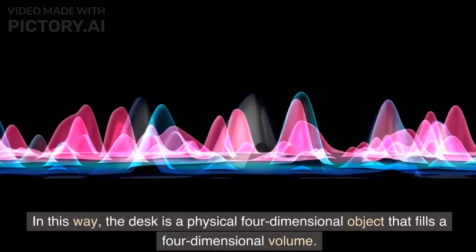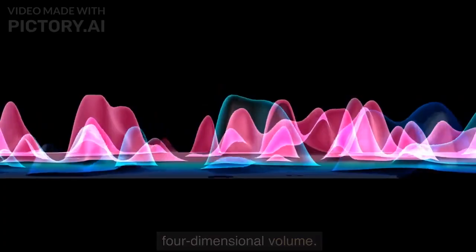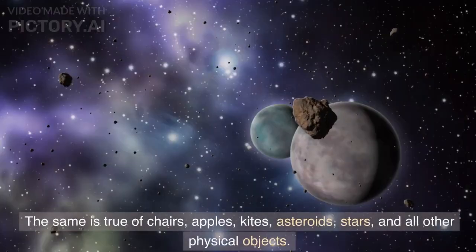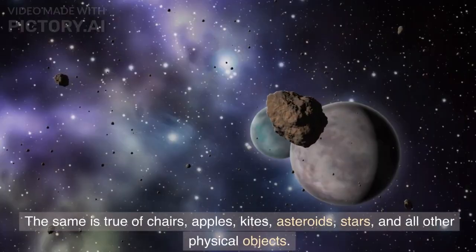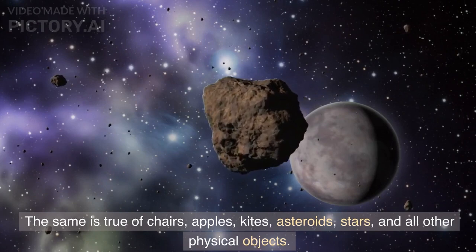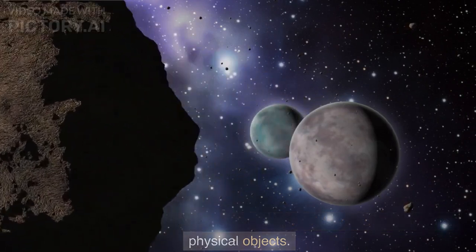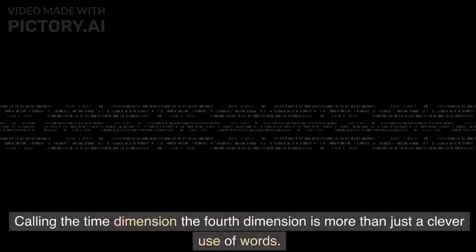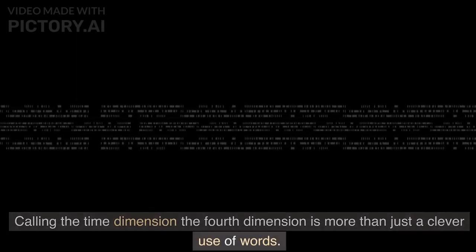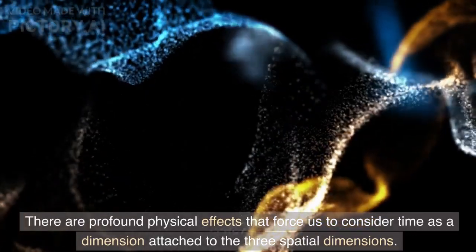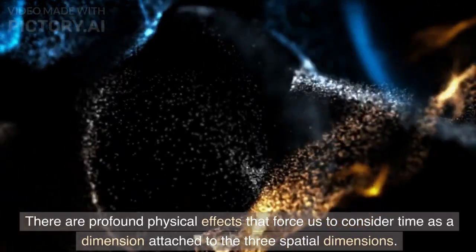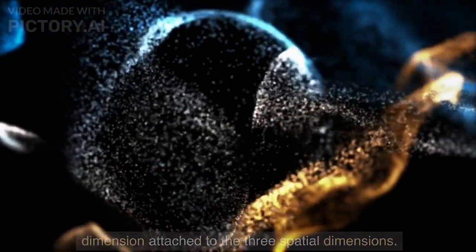In this way, the desk is a physical four-dimensional object that fills a four-dimensional volume. The same is true of chairs, apples, kites, asteroids, stars, and all other physical objects. Calling the time dimension the fourth dimension is more than just a clever use of words. There are profound physical effects that force us to consider time as a dimension attached to the three spatial dimensions.